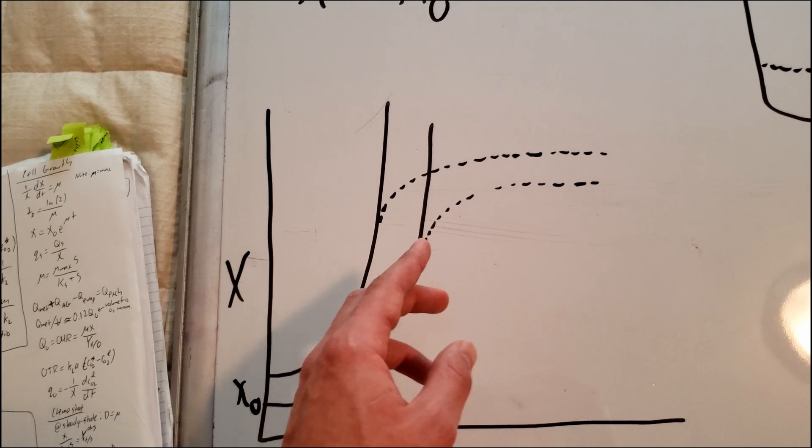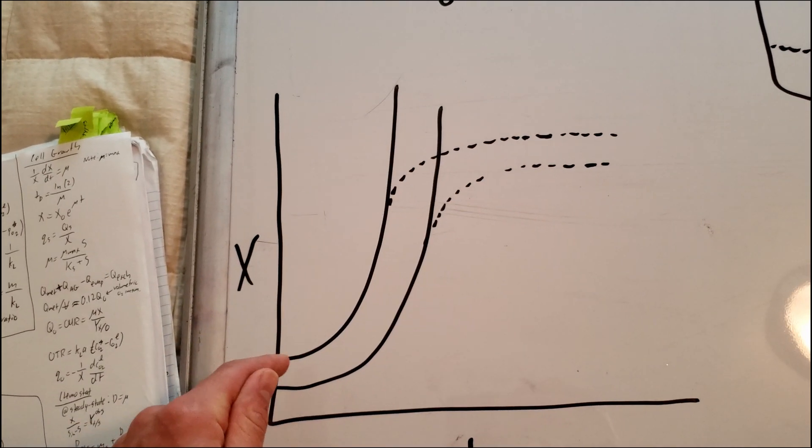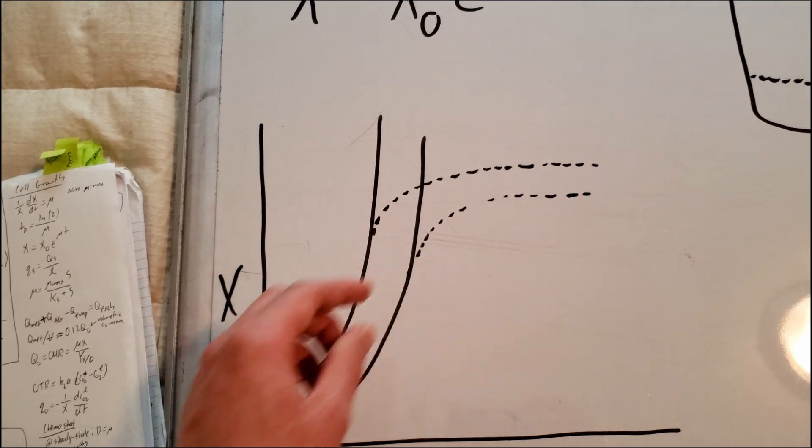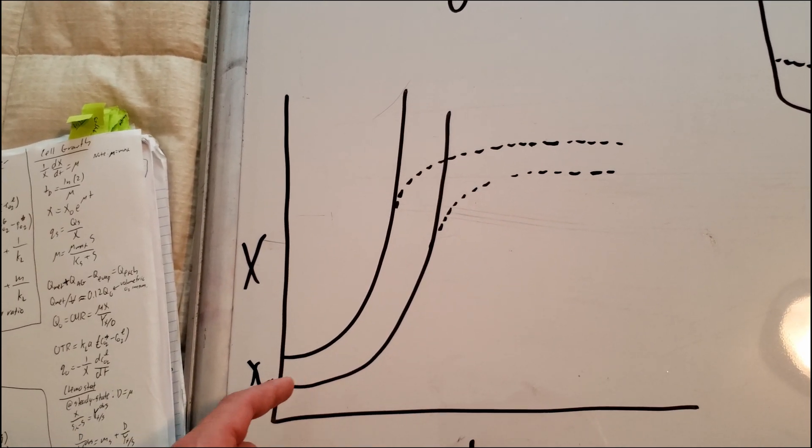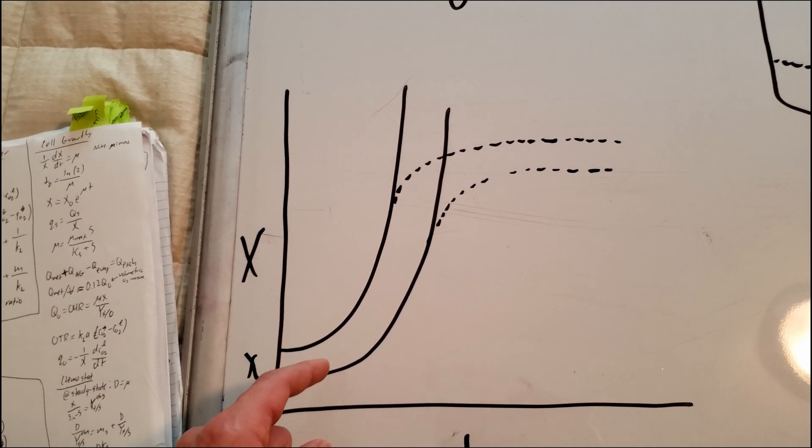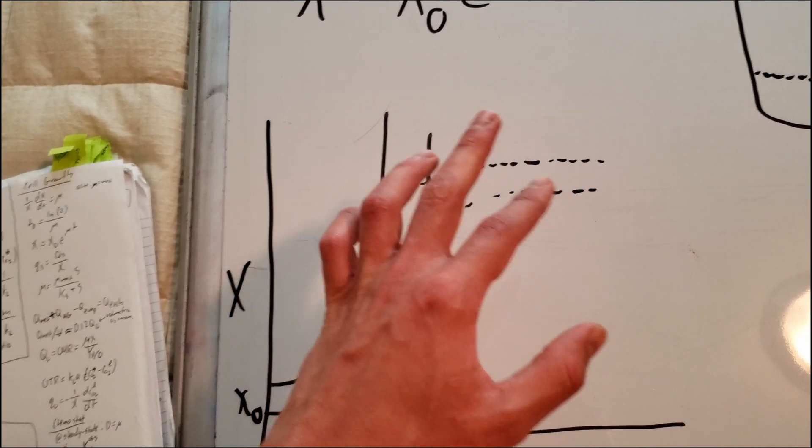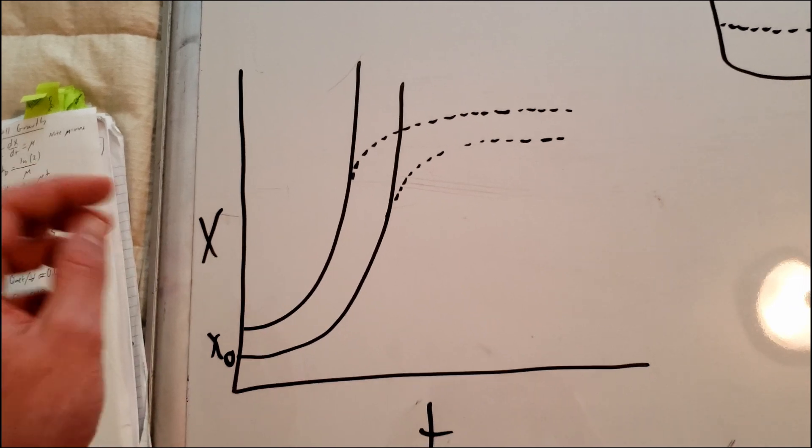These dotted lines here represent what an actual growth rate would be. You'd have this exponential growth and then eventually the cells would start to die off. And I talked about this a little bit earlier in the video, but in the fed batch reactor, potentially you could continue that exponential growth if you are continuously feeding in more substrate.